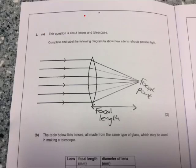This question is from the module P7 and it's on the topic of lenses and telescopes. The first part of the question asks you to complete and label the following diagram. It's a diagram of a convex lens and you have to draw on what happens to the parallel rays of light once they've traveled through the convex lens.